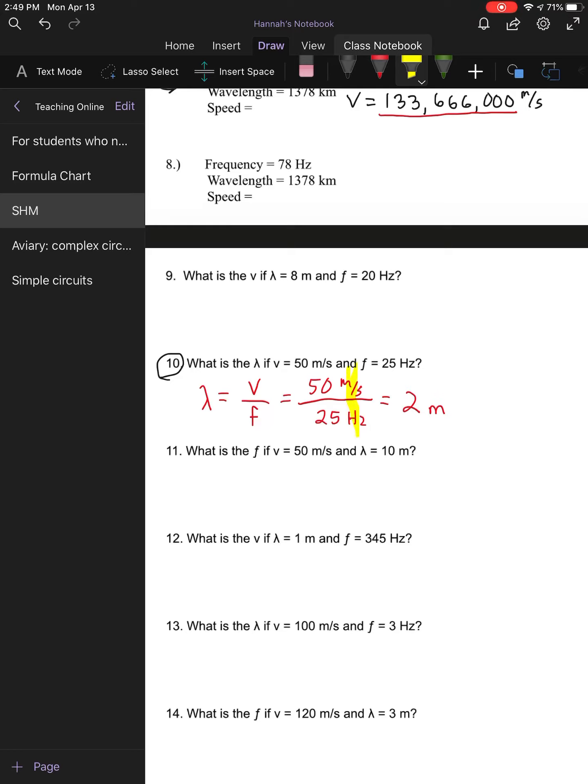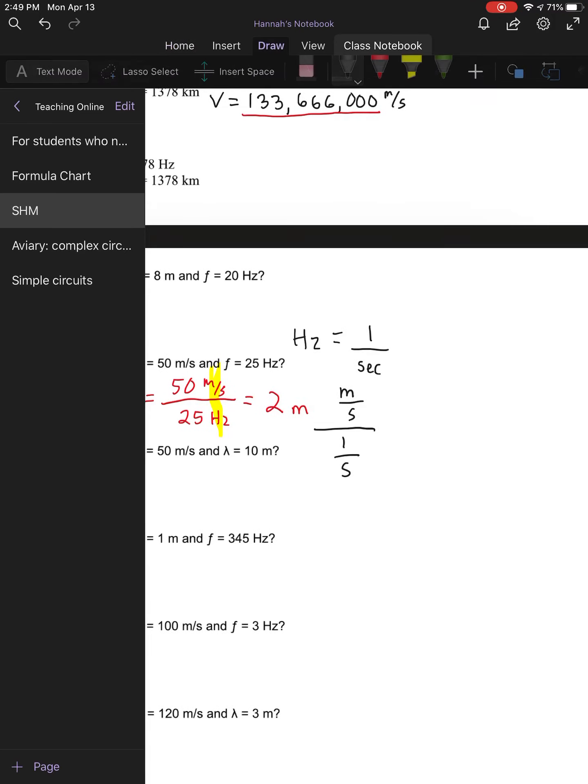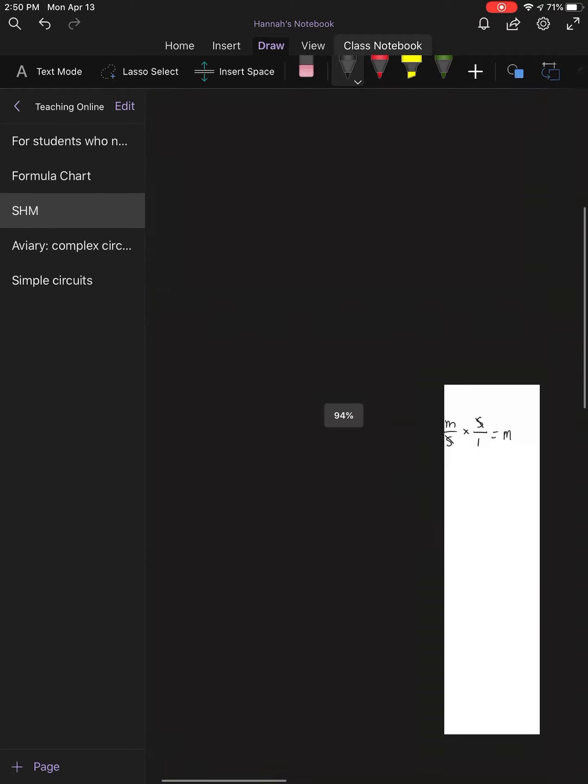So if you wonder how we take these units and end up getting meters, that's because hertz is equal to 1 divided by seconds. So it's basically the reciprocal of your time. So if we were to do meters per second divided by 1 over seconds, in order to divide fractions, we have to flip and multiply. So this is the same as meters per second times seconds over 1. Your seconds will cancel. Meters over 1 is equal to meters. So that's how we get 2 meters or how we get meters for our answer.